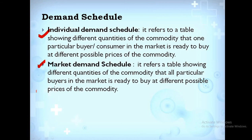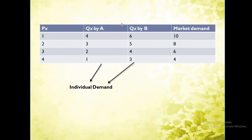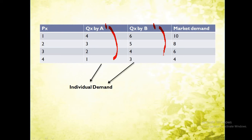Market demand schedule refers to a table showing different quantities of a commodity that all particular buyers in the market are ready to buy. Suppose maan lete hain ki market mein doh buyers hain — consumer A and consumer B. Agar in dohno ki demand ko mein add karta hoon, toh jo mere paas summation aayegi woh hogi market demand, on the assumption ki sirf doh consumers hain. Their individual demand schedules are added: four plus six gives ten, three plus five gives eight, two plus four gives six, one plus three gives four — this gives the market demand schedule.